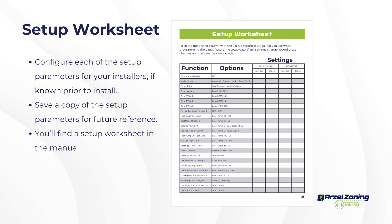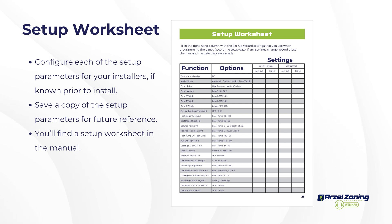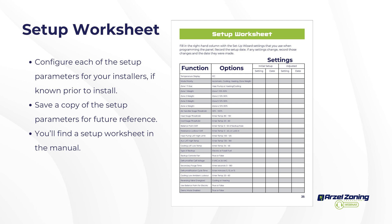Use the setup worksheet on the back of the manual to record all your settings — they're stored in non-volatile memory but a written record is essential. If settings change unexpectedly you'll know what was originally programmed. If a control board needs warranty replacement, having settings written down means you won't have to guess or interview the customer to restore everything correctly. Records are very important.